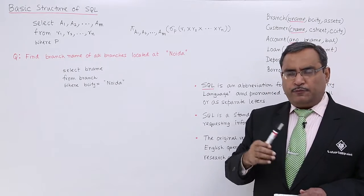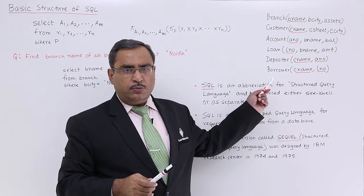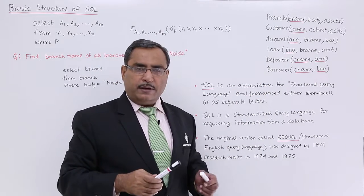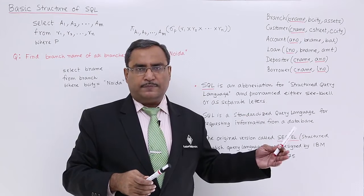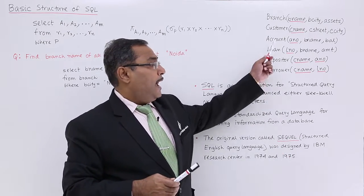Let us go for one example. But before going for example, let me make it clear that this particular chapter will be based on these six schemas, whatever we had in our previous chapters also, that we are having this Branch, Customer, Account, Loan, Depositor, and Borrower.